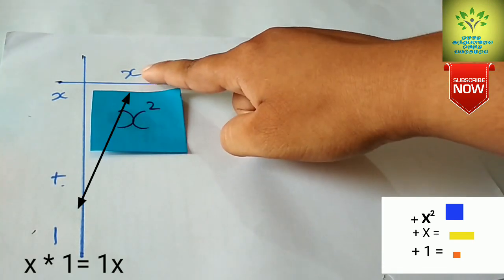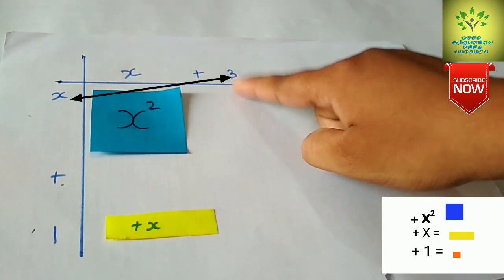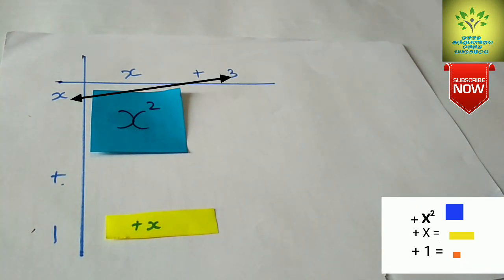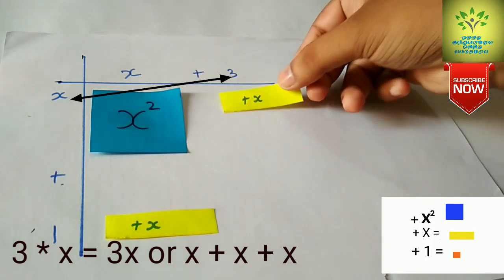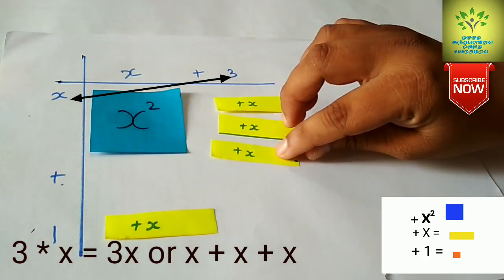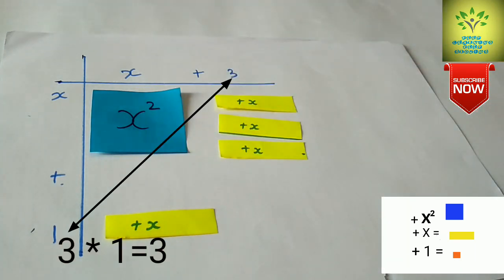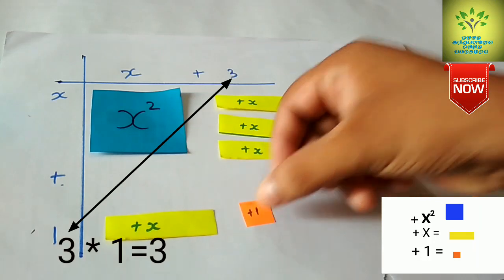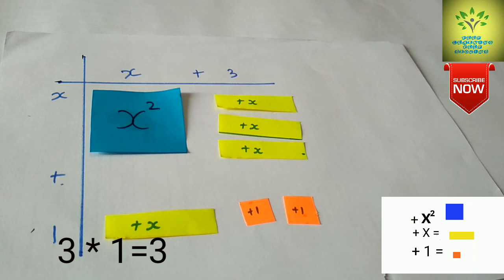x times 1 gives 1x, shown by one yellow strip. 3 times x gives 3x, so we need three yellow strips placed in position. Then 3 times 1 gives 3, so we place three orange pieces — one, one, one — each representing 1.